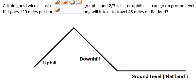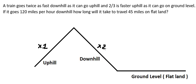So on the question, a train goes twice as fast downhill as it can go uphill. That means, for example, if this one that is about one time, so this one they will double number two in here.